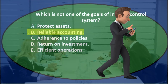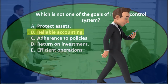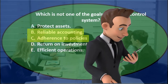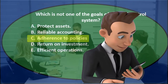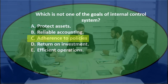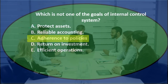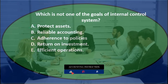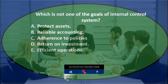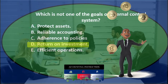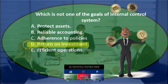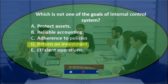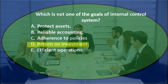B says reliable accounting. Reliable record keeping might be more what we would think, but it sounds like a good goal. C. Adherence to policies — an internal control wants to help us adhere to policies, so I'm going to say that's not it because that's true. D says return on investment, and that's a good thing, but I'm not sure that internal control is really designed specifically for return on investment. So I'm going to keep that for now.